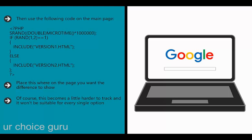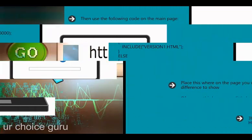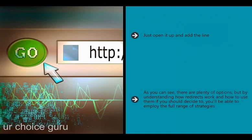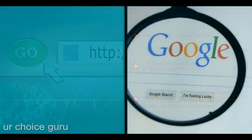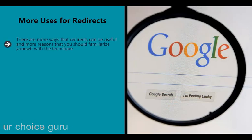You can also create two full page include files and have them load instead. Finally, you can include what is known as a 301 redirect, which you'll achieve by using your .htaccess file available through your file manager. As you can see, there are plenty of options, and by understanding how redirects work you'll be able to employ the full range of strategies.